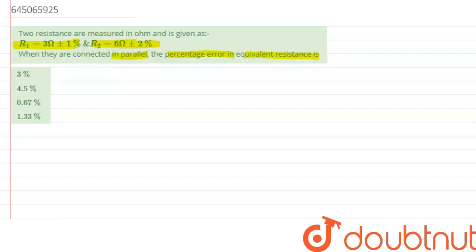So we need to calculate the percentage error in equivalent resistance. First let's try to calculate the formula for equivalent resistance. We know when two resistances are connected in parallel their equivalent resistance is given by 1 over R_eq and that equals 1 by R1...